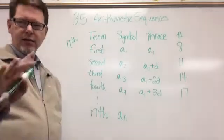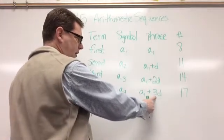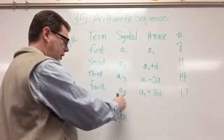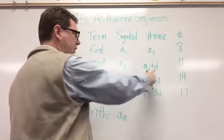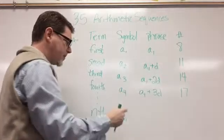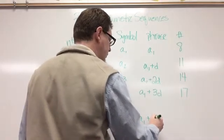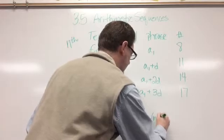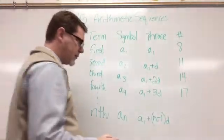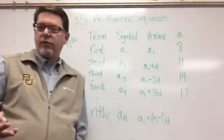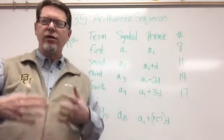The formula for that: look at the pattern — the three came from four minus one, the two came from three minus one, the one came from two minus one. So we start with a sub one and add n minus one, where n is the number of the term, times d. That gives us the nth term. This is the formula you need to have memorized, because that's how you find any term in a sequence: a sub n equals a sub one plus the quantity of n minus one times d.